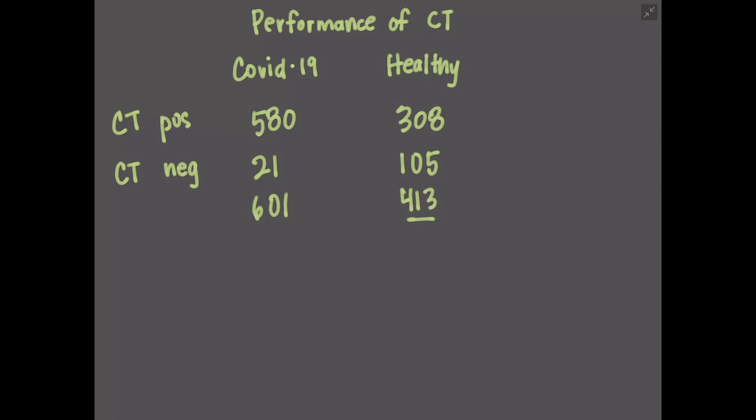So from this, now we can calculate sensitivity, specificity, and predictive value. So remember that to calculate sensitivity, we have to take the number of cases that were positive for the test that we want to look at, and then divide that by the total number of positive cases, so 580 divided by 601, and that is sensitivity. And that comes out to about 97%.